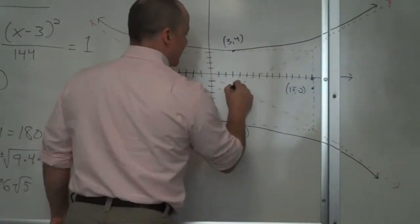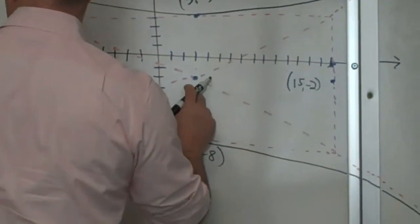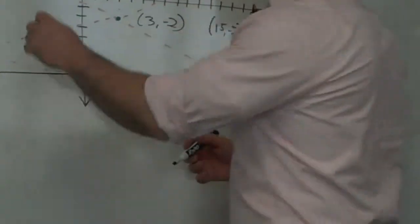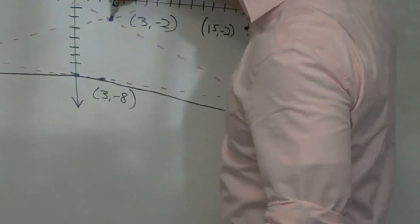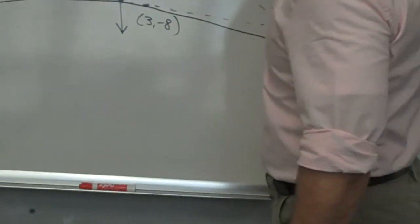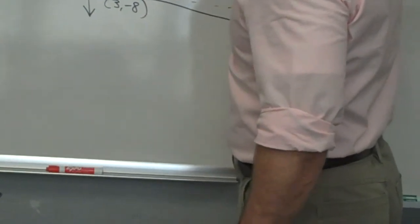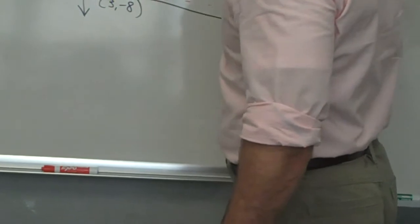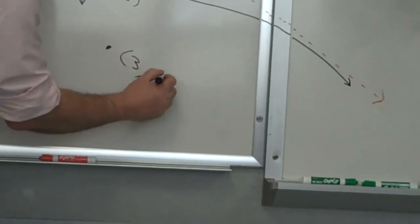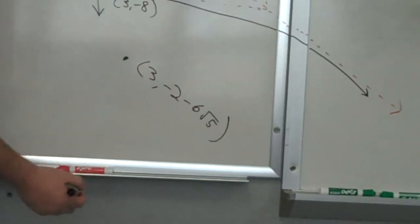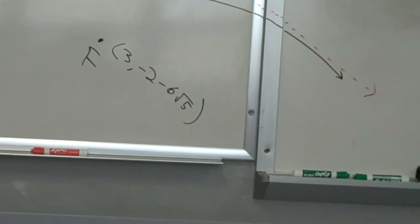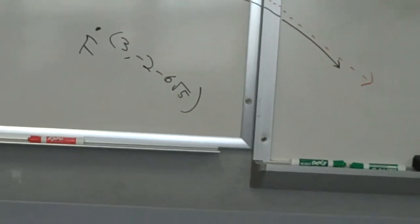So from this point, which we said was 3, negative 2, now we have to go up 13 from here, 13.1 from here, so that's going to be up to around 11. I'm just going to label this point 3, 11.1, or actually 3, negative 2 plus 6 root 5. And then I have to go down about the same distance, and I'm just going to label it 3, negative 2 minus 6 root 5. And these are my foci.